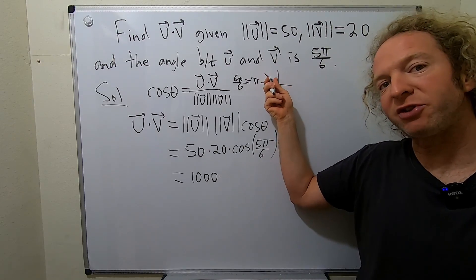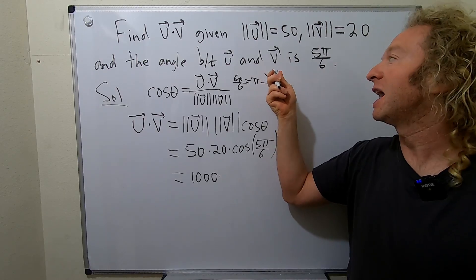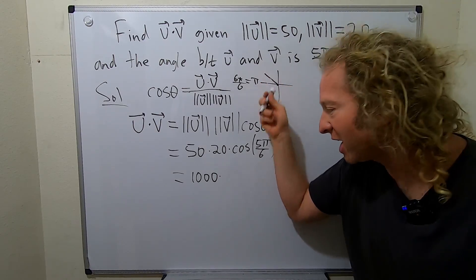So because the cosine of π over 6 is the square root of 3 over 2, 5π over 6 has the same reference angle. So cosine is the x-coordinate on the unit circle, and x is negative here. So this is negative square root of 3 over 2.